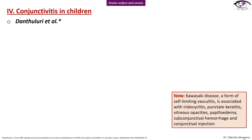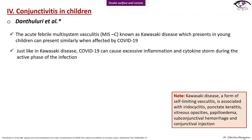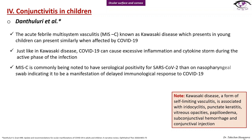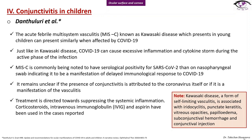Conjunctivitis in children was published from Dantuluri et al. The acute febrile multisystem vasculitis known as Kawasaki disease, which presents in young children, can present similarly when affected by COVID-19. Just like in Kawasaki disease, COVID-19 can cause excessive inflammation and cytokine storm during the active phase of infection. This disease is commonly noted to have serological positivity for SARS-CoV-2 rather than on nasopharyngeal swab, indicating it to be a manifestation of delayed immunological response. It remains unclear if conjunctivitis is attributed to the coronavirus itself or is a manifestation of vasculitis.